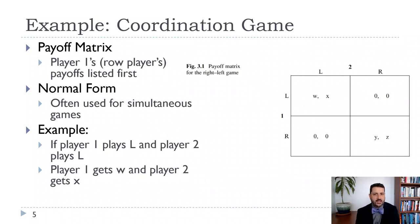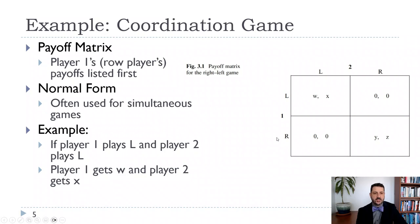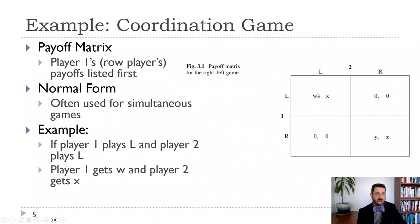This is how we write simultaneous games. We have two players: player one is the row player and player two is the column player. In this case, each has two strategies — L and R. Inside each box are the payoffs. If player one chooses L and player two chooses L, player one gets W and player two gets X. If player one chooses L and player two chooses R, both get zero. If player one chooses R and player two chooses L, they both get zero. If player one chooses R and player two chooses R, player one gets Y and player two gets Z.